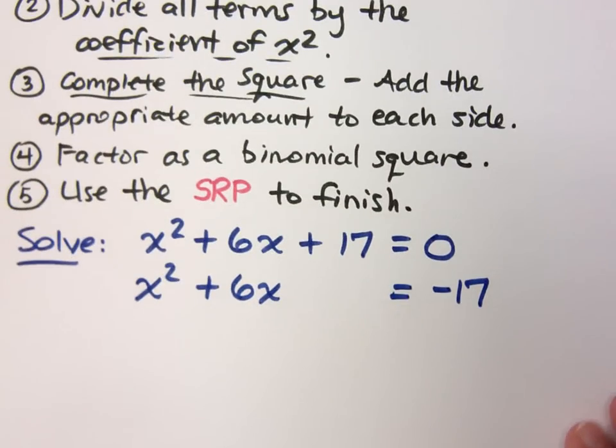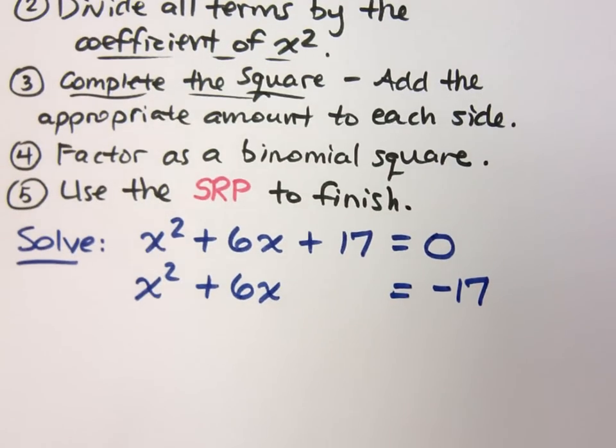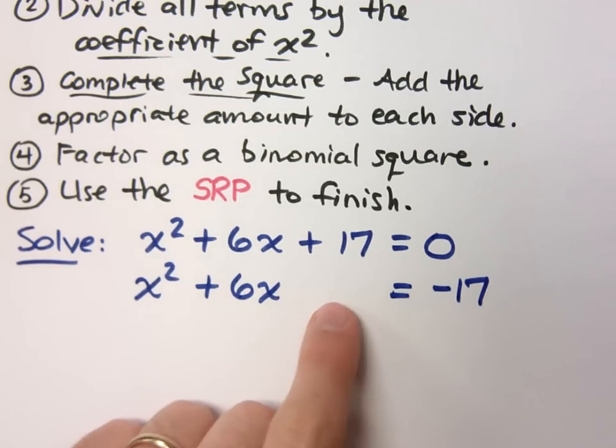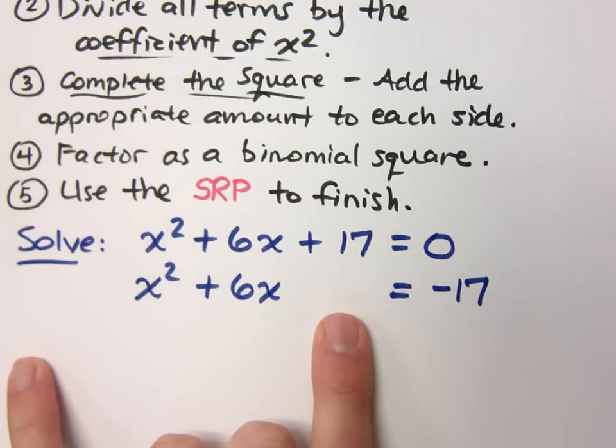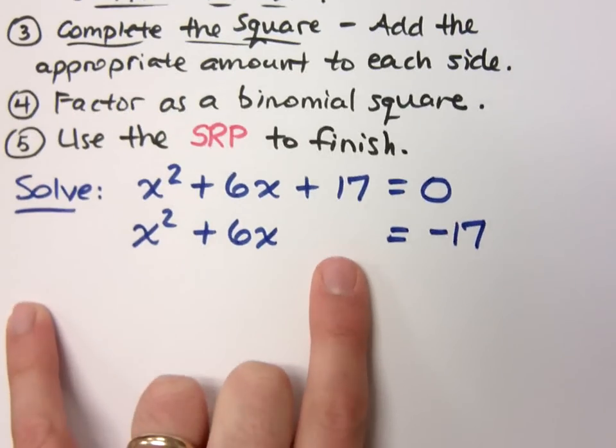Step two says divide all terms by the coefficient of x squared. What's the coefficient of x squared? So does it matter if I divide by one? No. And notice that I also left a gap here. I left the gap because of this third step.